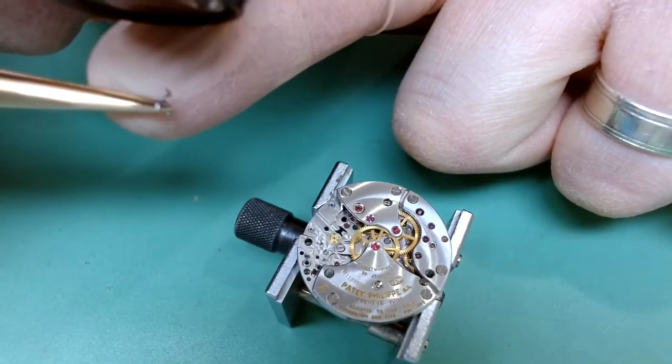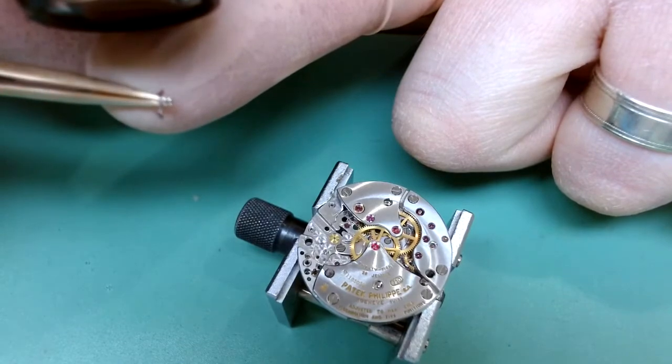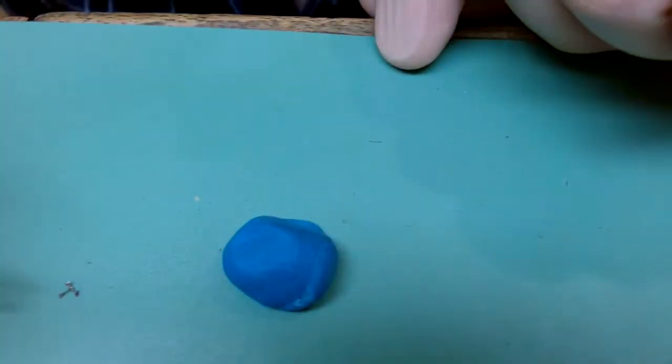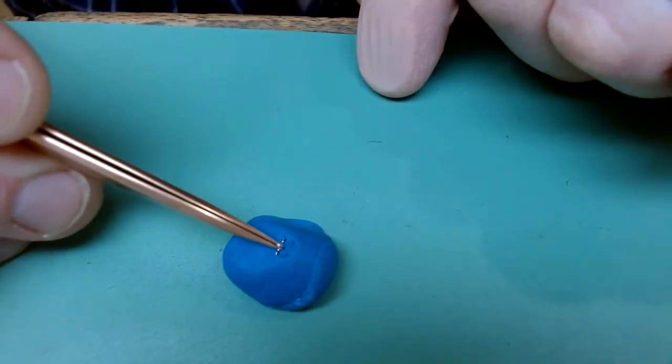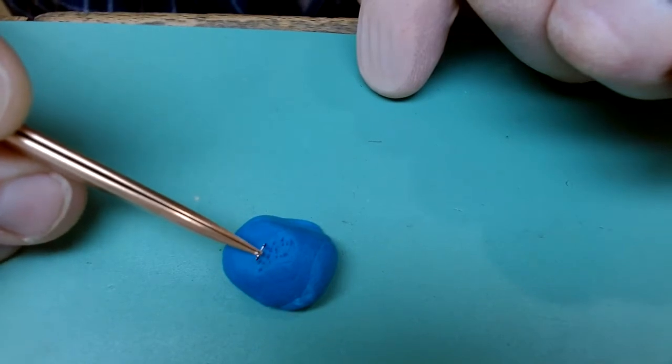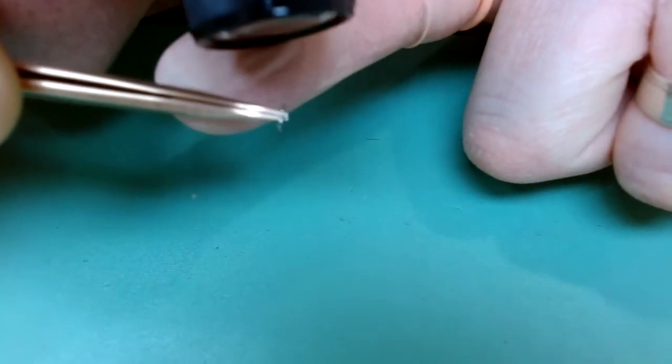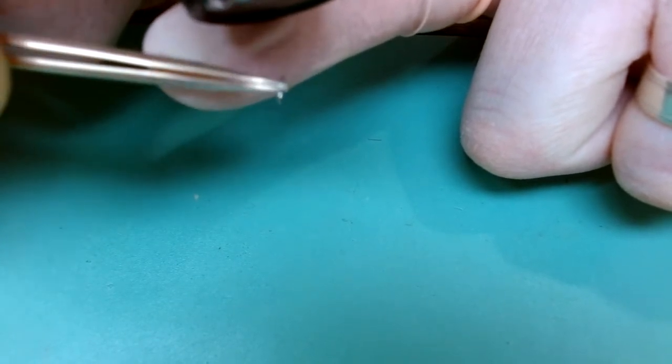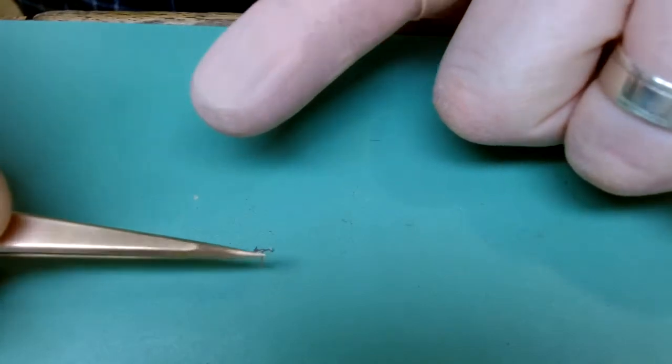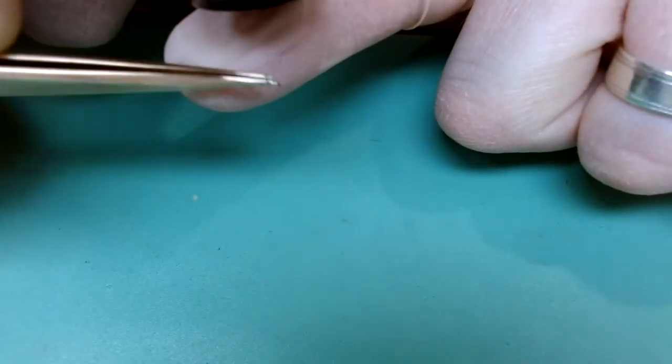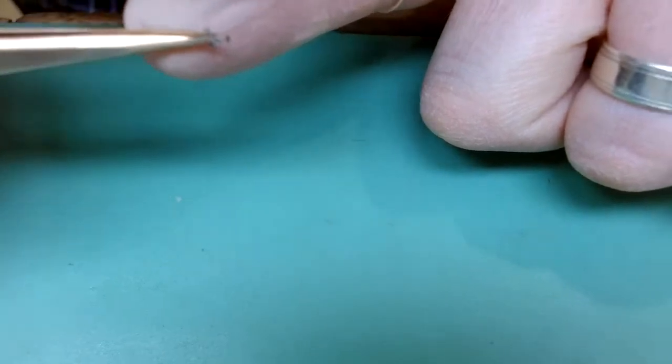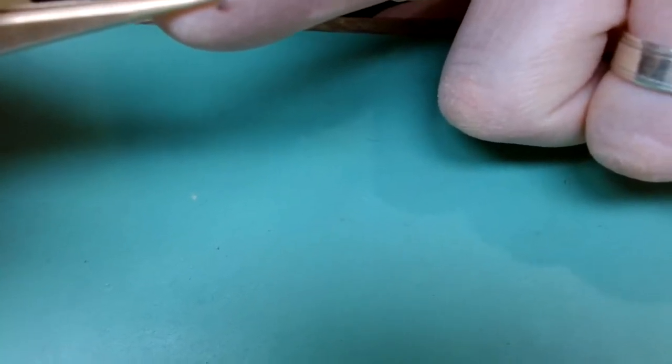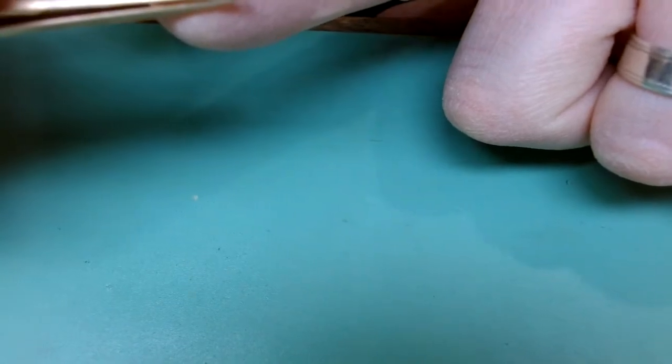Put our pallet cock to the side and we'll inspect our pallet fork for any wear. It seems to be okay—there's just one area of concern that I'm going to have a look at. Use the rodico to just clean them off so that we can see what's old lubricant and what's damaged. We've got no damage to our stones. We can check our horns for wear and we look okay.